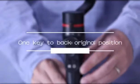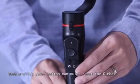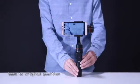One key to back arrangement position. Double click power button, then quick reset the Jimbo back to arrangement position.